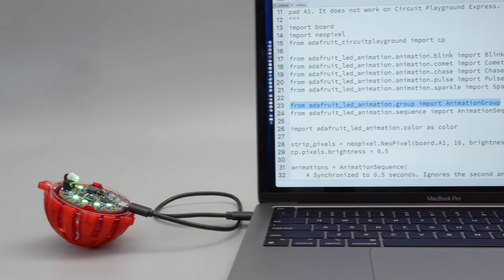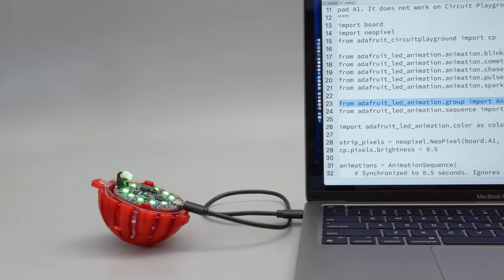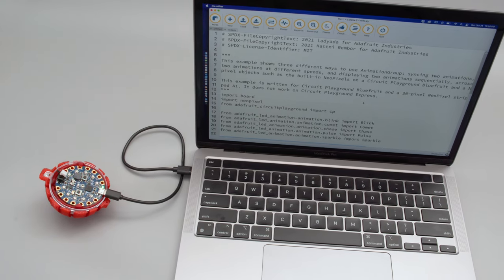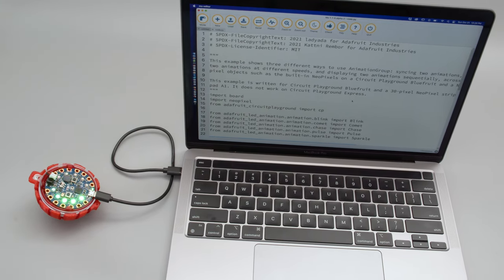With the animation group module you can animate multiple NeoPixel objects so you can animate them independently to make really cool effects. CircuitPython makes iteration much faster so you can experiment quicker and focus more on your creativity.